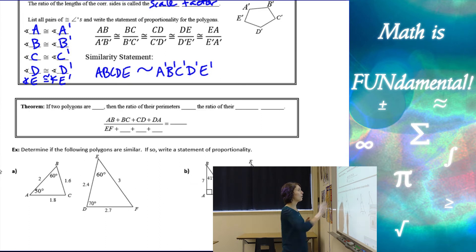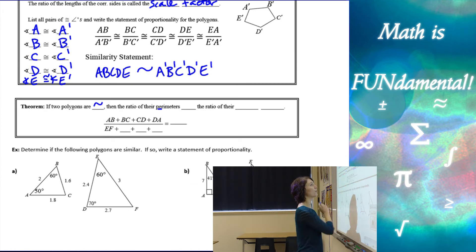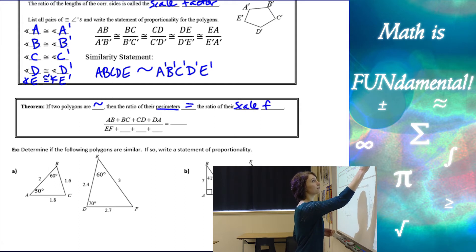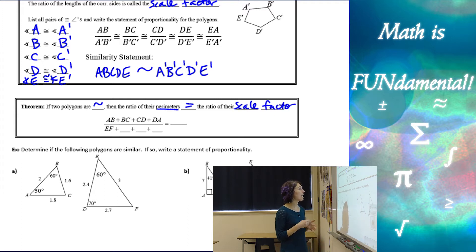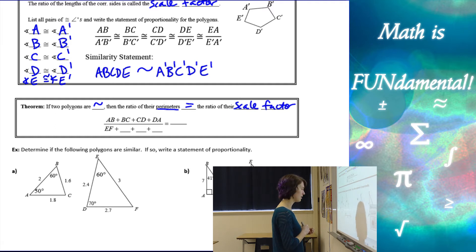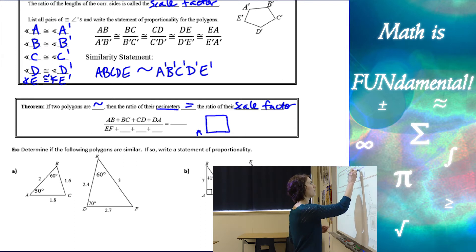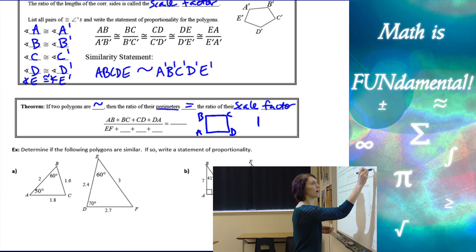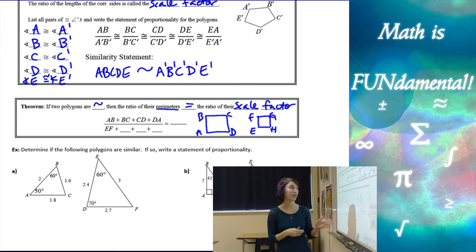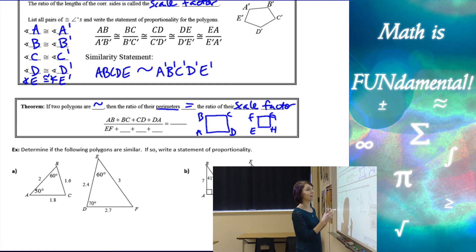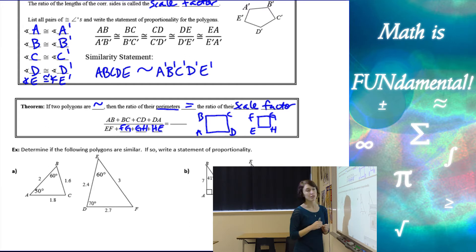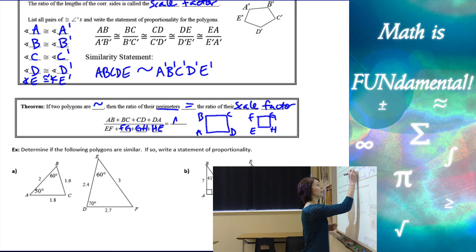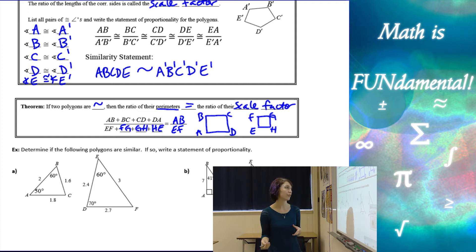Here's a theorem: if two polygons are similar, then the ratio of the perimeters is equal to the ratio of the scale factor, or the ratio of the sides. For example, with quadrilaterals ABCD and EFGH, if I take the perimeter of the first shape — AB plus BC plus CD plus DA — and divide it by the perimeter of the second shape EF plus FG plus GH plus HE, that ratio equals the scale factor, just like taking one pair of corresponding sides and dividing them.